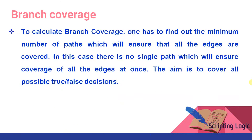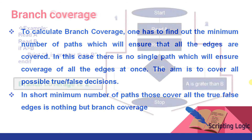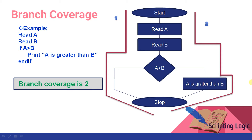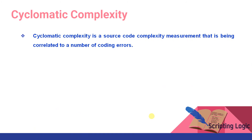To calculate branch coverage, find out the minimum number of paths which will ensure that all edges are covered. There is no single path which will ensure coverage of all edges at once. The aim is to cover all possible true/false decisions. In this example, though one path covers all the nodes, it doesn't cover all the true/false edges. So we need another path, making the branch coverage 2.